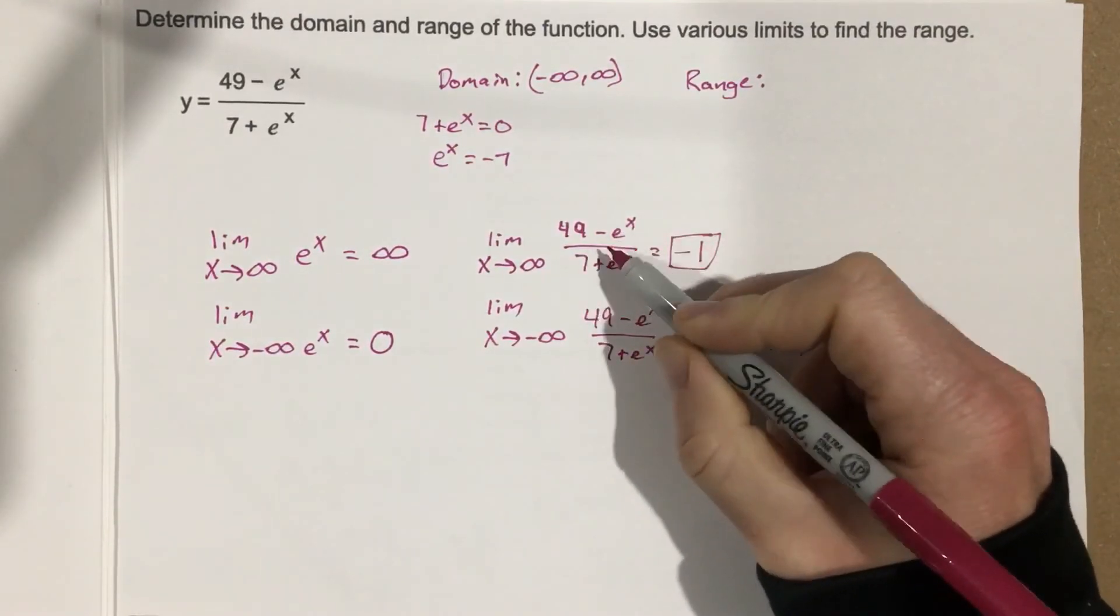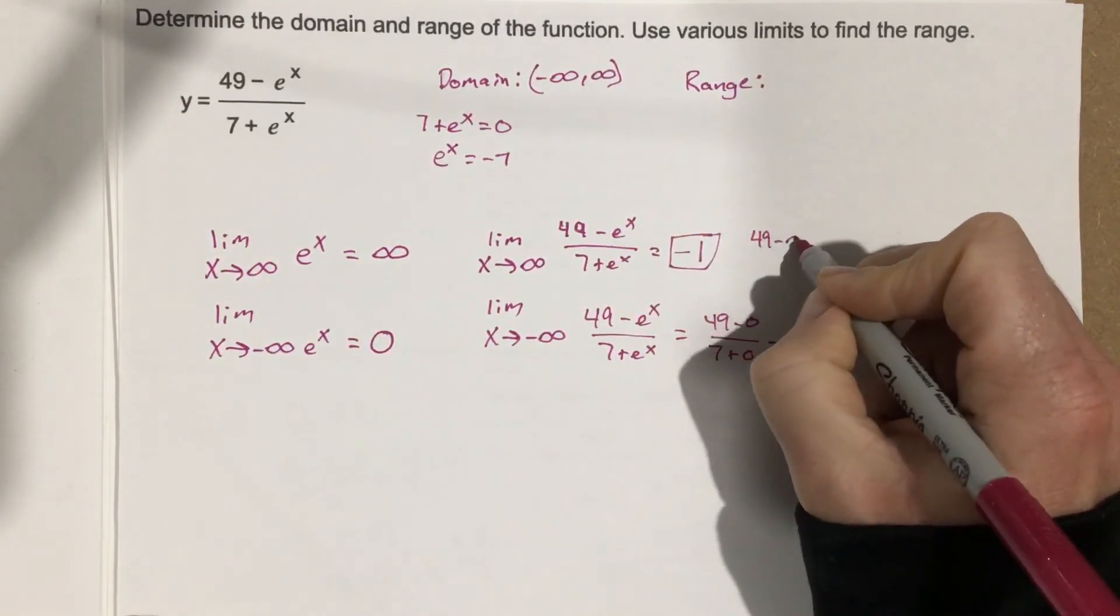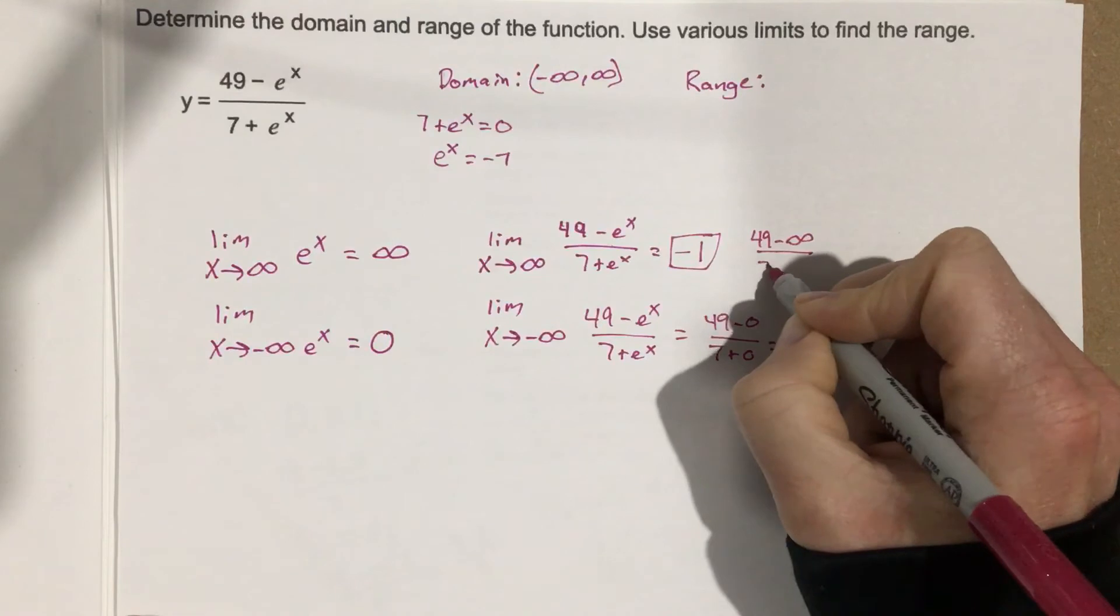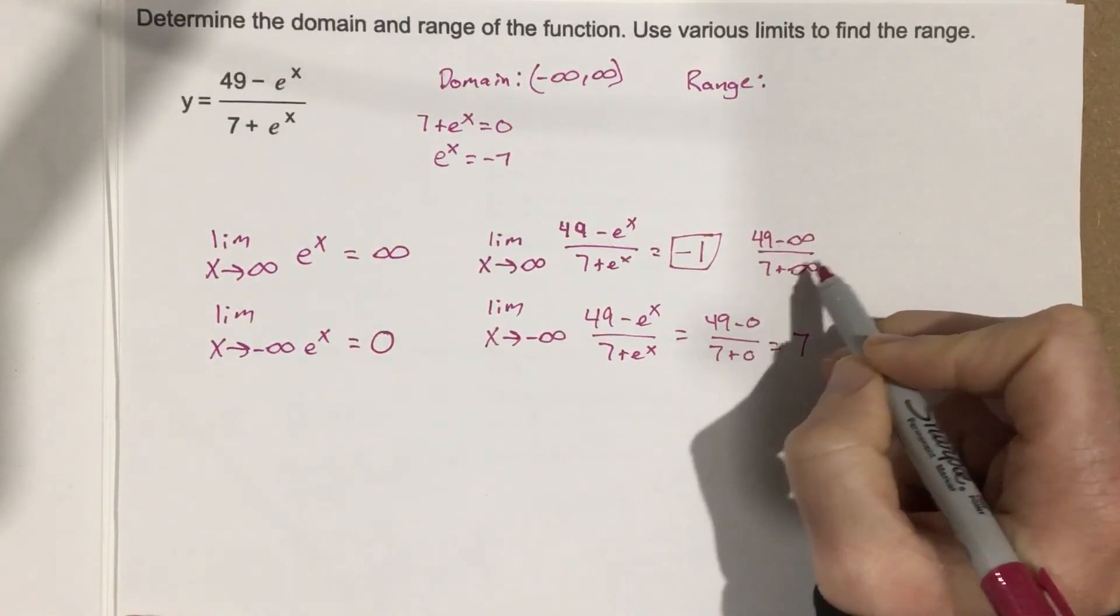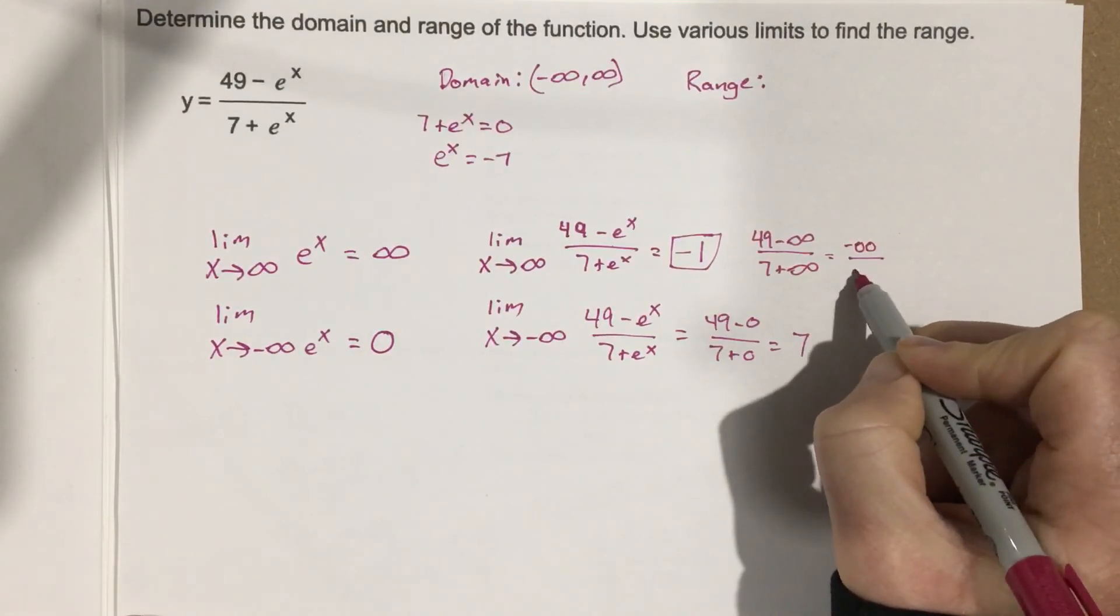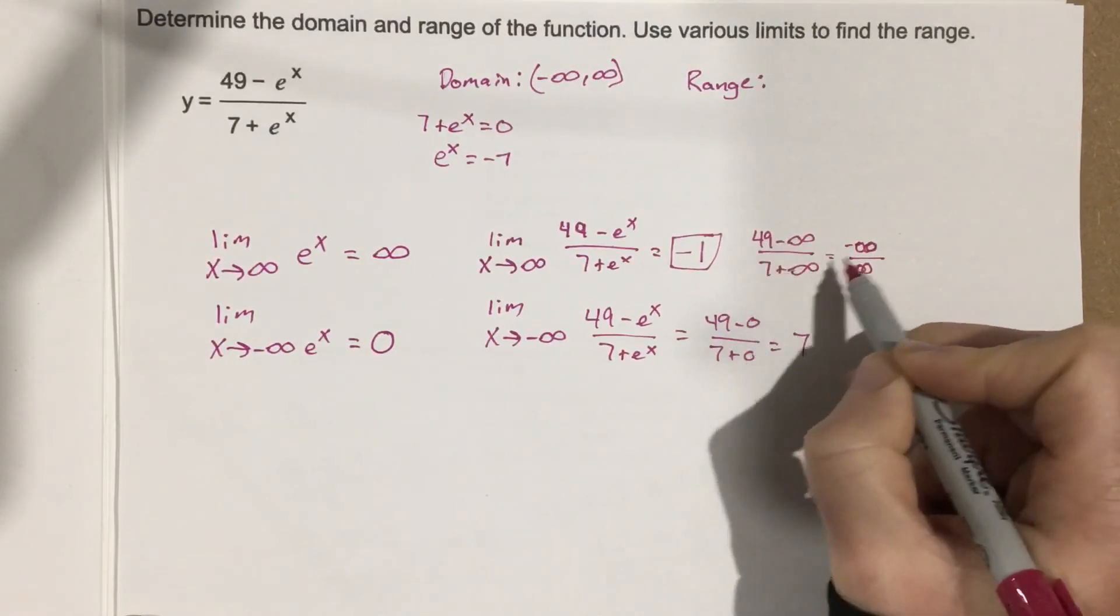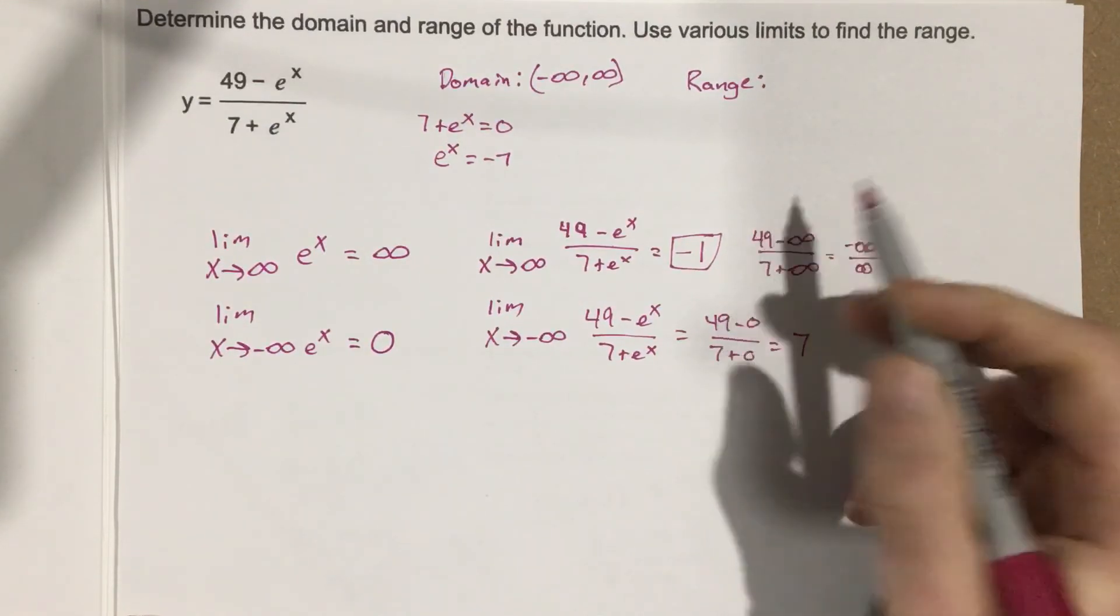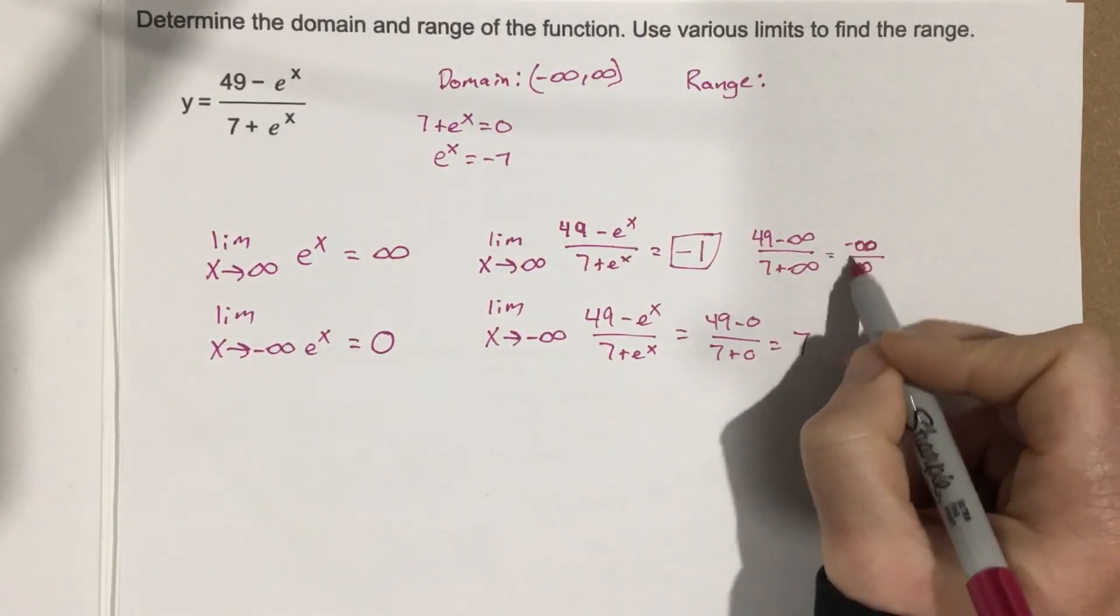So I just want to reiterate here, when I plug in infinity, essentially I'm getting 49 minus infinity over 7 plus infinity. So I'm going to end up with two numbers that are essentially large. Now, you don't really like to write it like this. But you'll see that you're going to get two numbers that are really large. You know, we could plug in some really large numbers and you'll see that they'd be essentially leading to this negative 1 number.